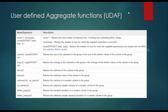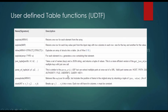Also, we have built-in UDAFs — that means aggregation functions. Aggregation functions use multiple values instead of a single column. If you wanted to find average, maximum, minimum, standard deviation, sum, average, count — such things are called aggregate functions. We also have table-defined functions like explode and parse. With explode, it returns one row for each element if you have multiple arrays.